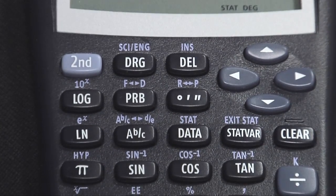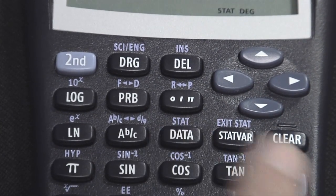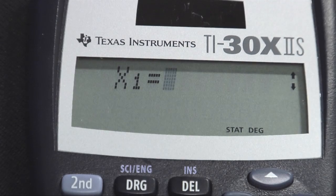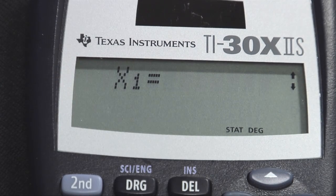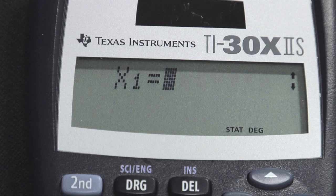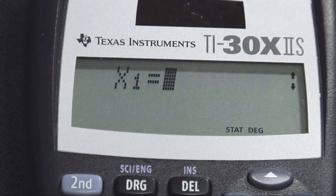I'm ready to enter some data, so I can hit the data button. I'm lucky because this says X1, meaning it's ready for the first number. But what if there was already a set of data stored in that list? Then what you would need to do is clear the list.